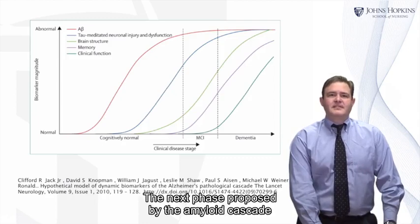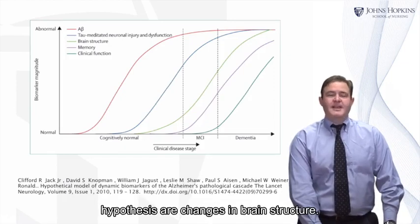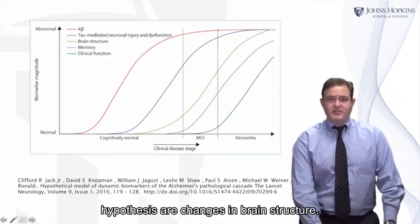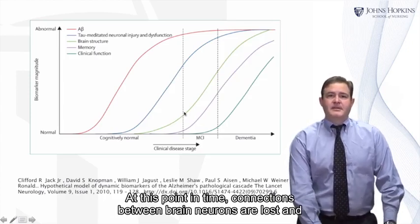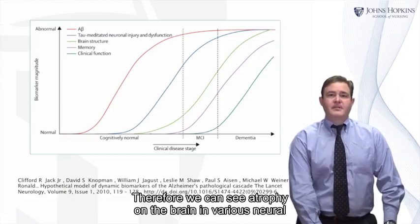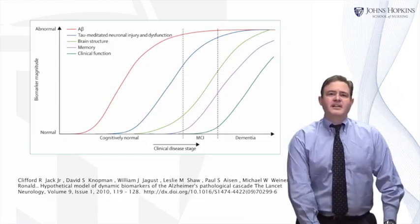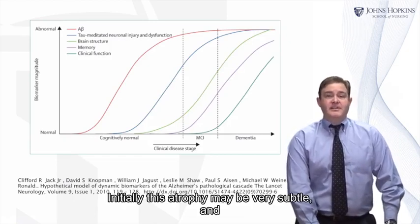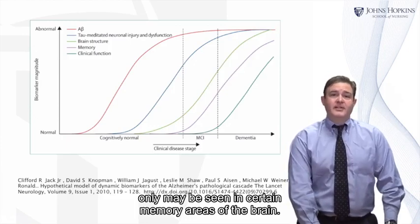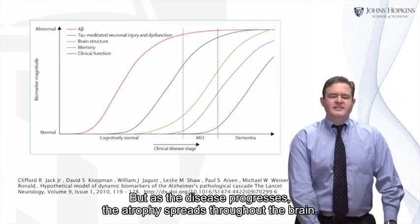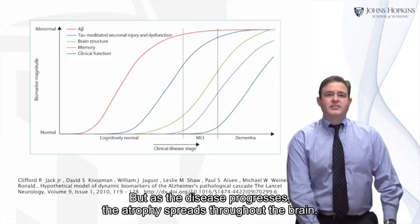The next phase proposed by the amyloid cascade hypothesis involves changes in brain structure. At this point, connections between brain neurons are lost and neurons will die. Therefore, we can see atrophy on the brain using various neuroimaging techniques such as MRI and CAT scan. Initially, this atrophy may be very subtle and only seen in certain memory areas of the brain, but as the disease progresses, the atrophy spreads throughout the brain.